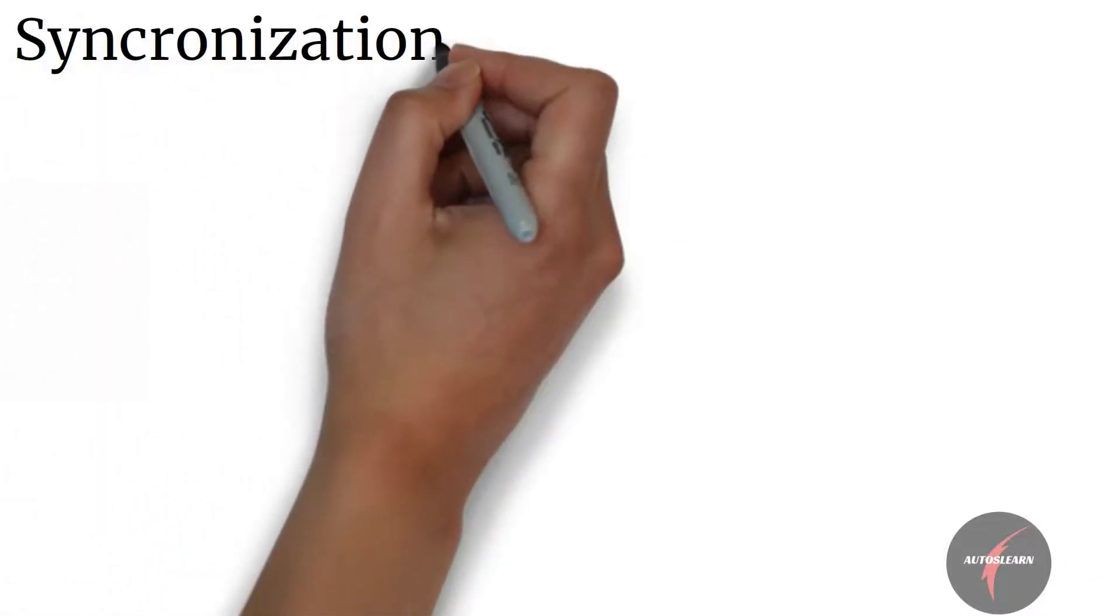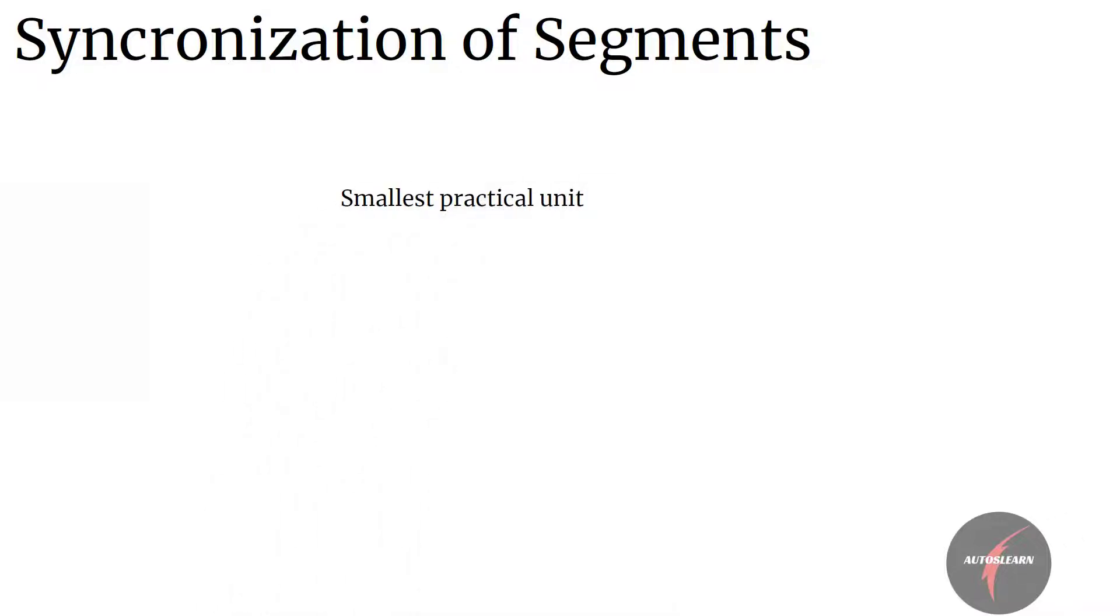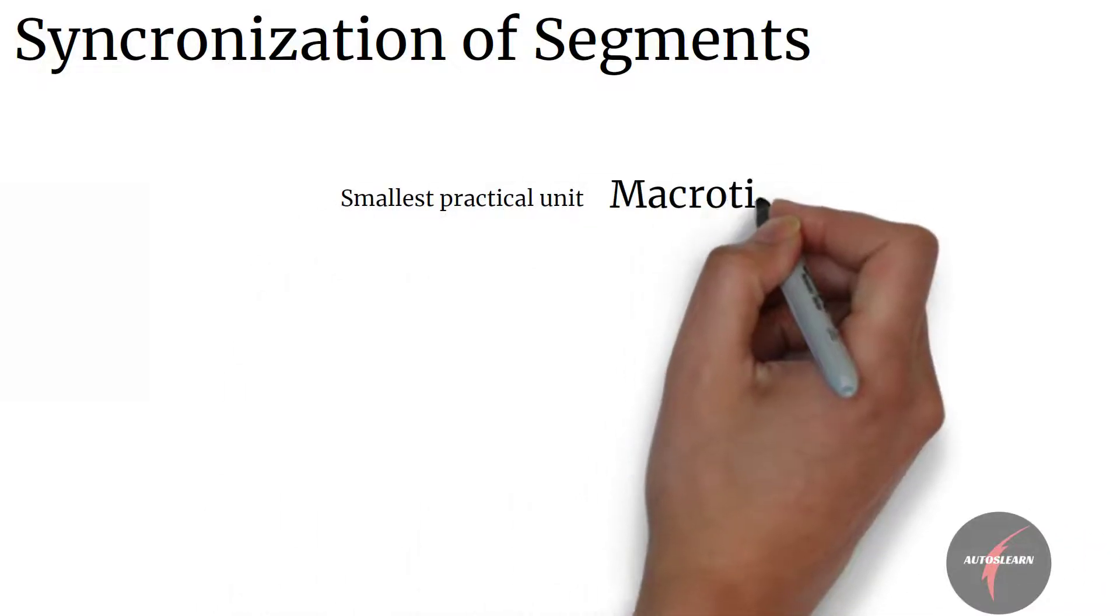The smallest practical unit of time on the FlexRay network is a macro tick.